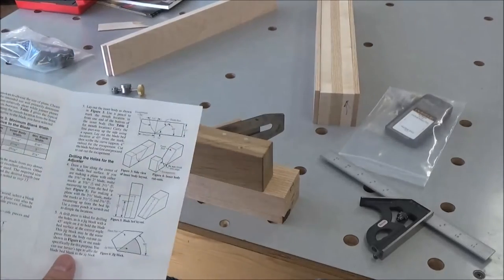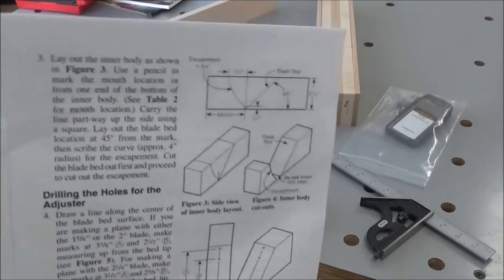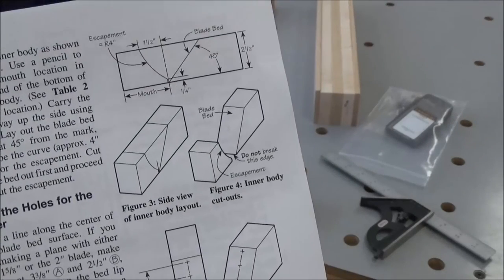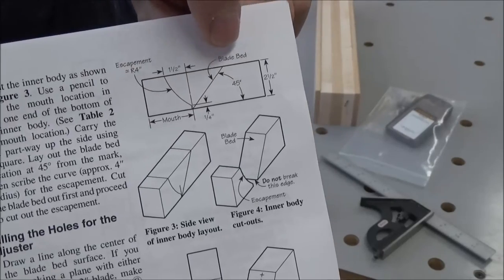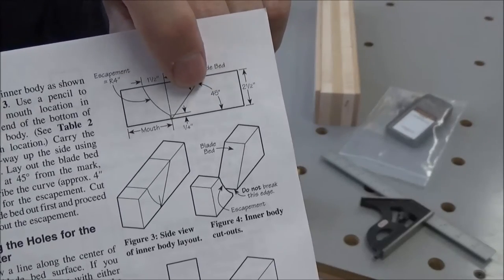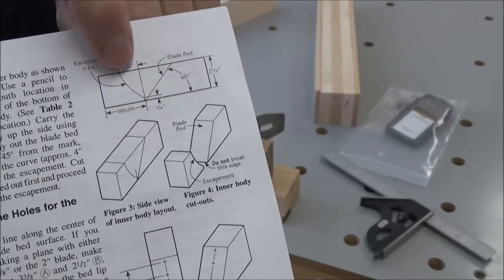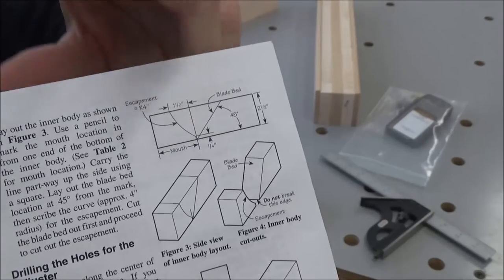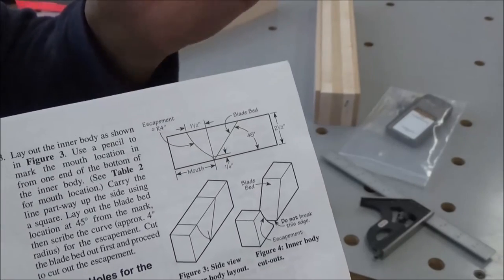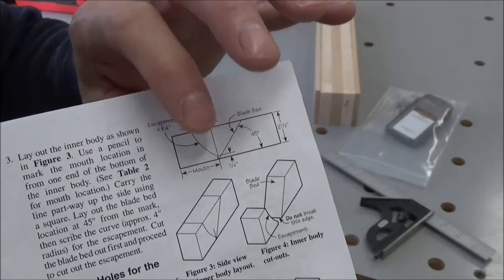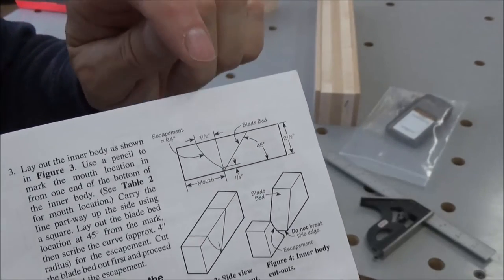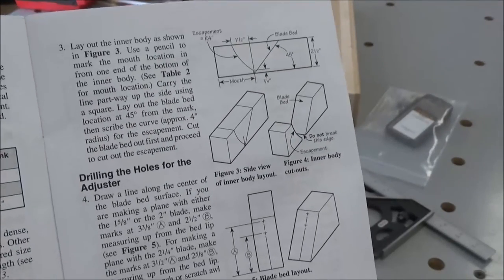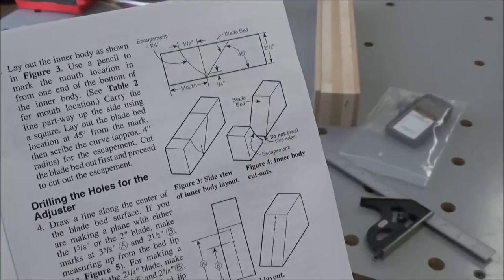You can see from the instructions here the layout that they want you to do: a 45-degree line for the bevel cut where your plane will sit, then the removal of the waste on the front piece for when your chips come through. The most critical thing is to locate that 45-degree cut. I'll lay that out, make that cut, and then come back and show you what I have.